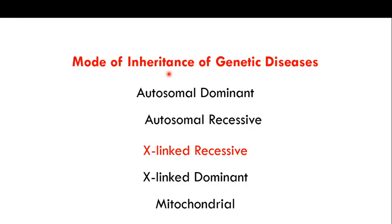In the previous videos I told you about the autosomal dominant, using Huntington's disease as an example, and then I talked about the autosomal recessive genetic diseases, using sickle cell anemia and cystic fibrosis as examples of autosomal recessive disorders.